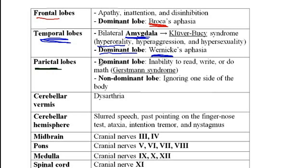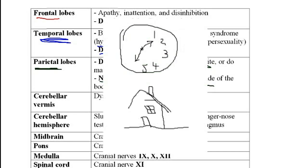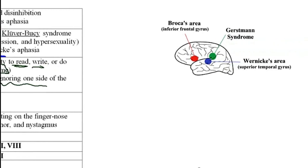With a lesion of the parietal lobe, if it affects the dominant lobe, patients would be unable to read, write, or do math. They also cannot recognize fingers or distinguish right from left, and this is referred to as Gerstmann syndrome. If it affects the non-dominant lobe of the parietal part of the brain, they would ignore one side of the body — for example, a patient ignoring the left side and only drawing the right side of an image. Gerstmann syndrome is in the parietal lobe, Wernicke is in the temporal lobe, and Broca's is in the frontal lobe.